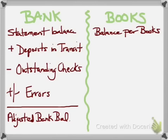Likewise, sometimes you've written out checks and you know the money is going to be taken out of your account, but the bank hasn't actually processed them yet. So you need to subtract from the bank balance the amount of any outstanding checks. And if there are errors — in your favor or against you — you would add or subtract those amounts to arrive at an adjusted bank balance.